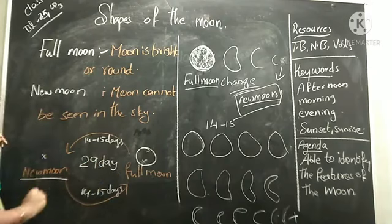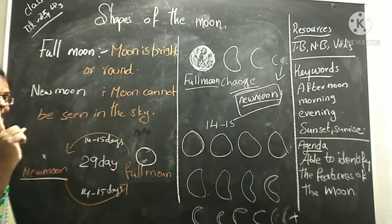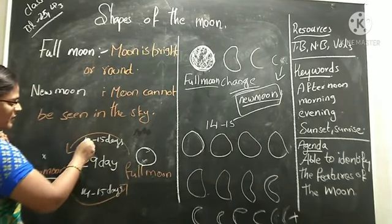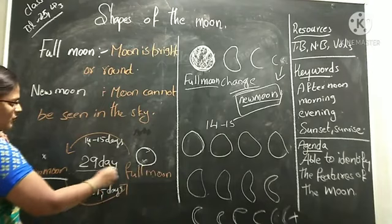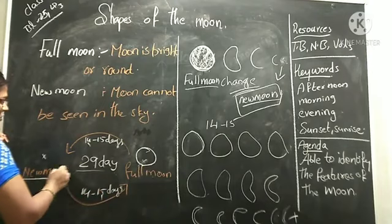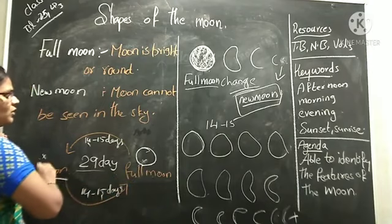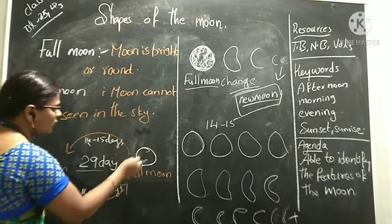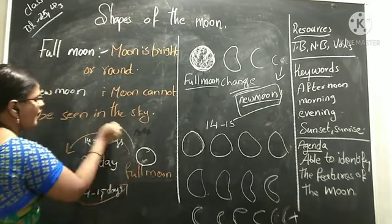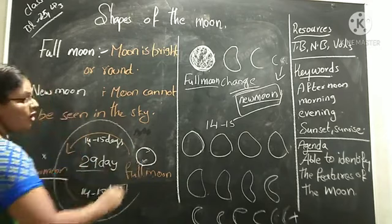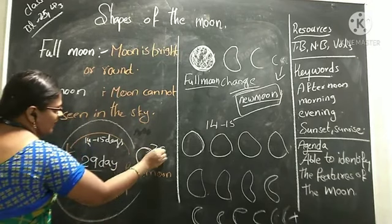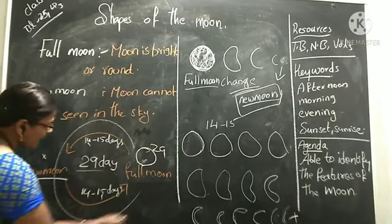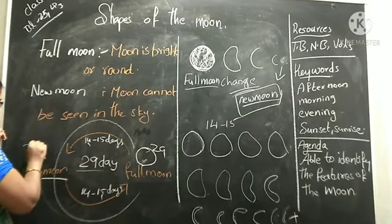From one new moon, if you want to see the next new moon, how many days will it take? 14 to 15 days one way, and 14 to 15 days back — that's 29 days in total from new moon back to new moon again.